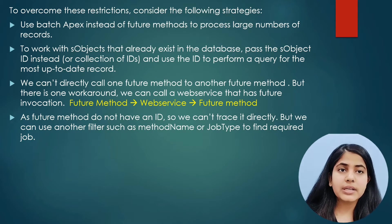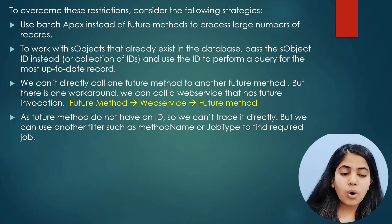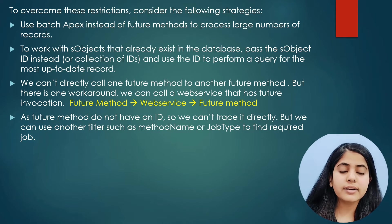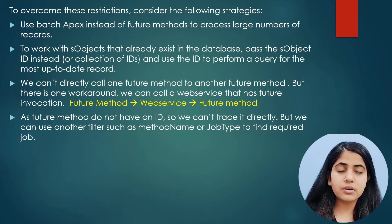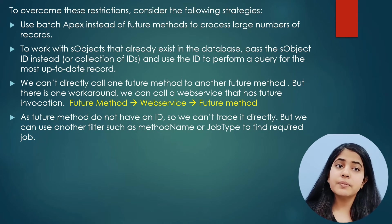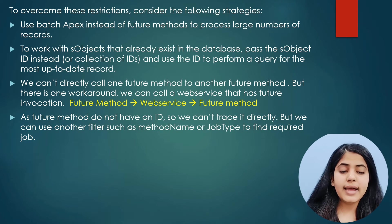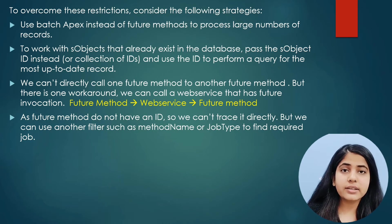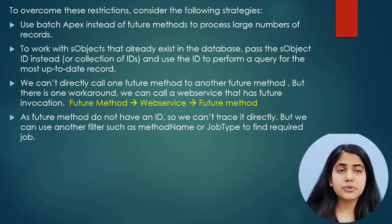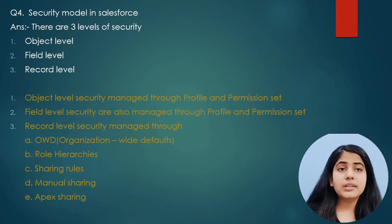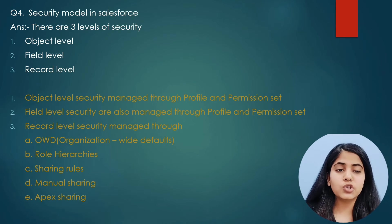Although it is not recommended, if the requirement demands calling future methods from another future method, there is a workaround: call a web service that has a future invocation. So one future method calls a web service, and that web service then calls the next future method — that way we can chain future method calls. For tracing, since future methods do not return an ID, it is very difficult to trace them directly. We can use other filters such as method name or job type to find the required job.